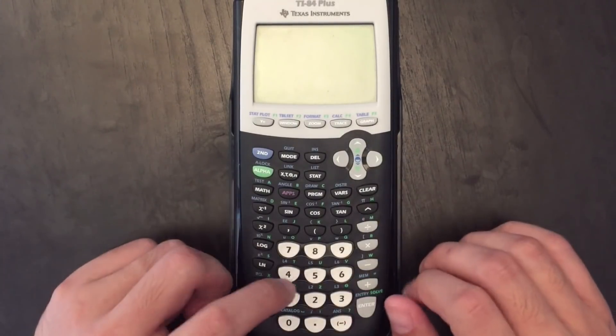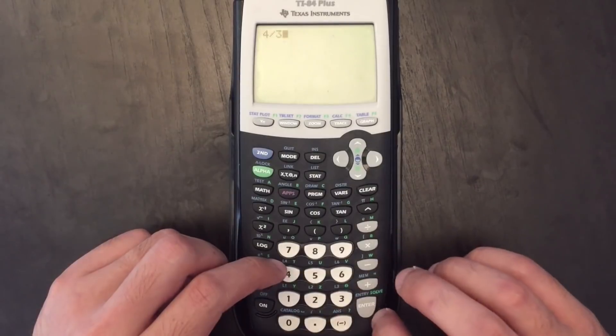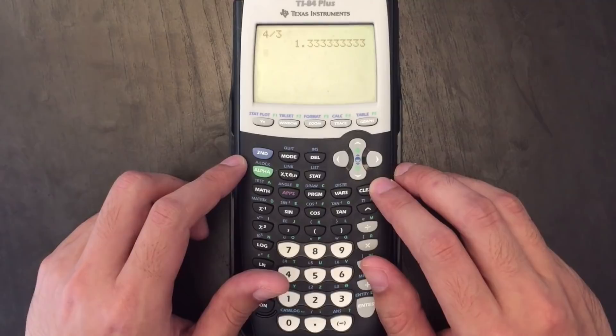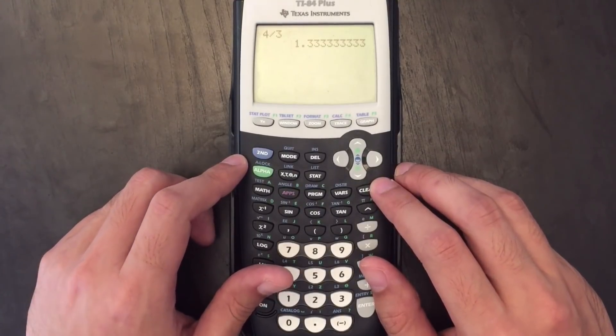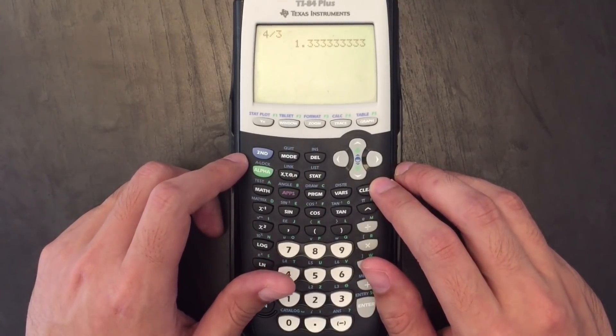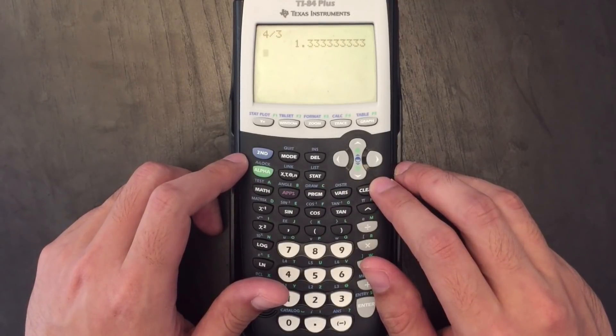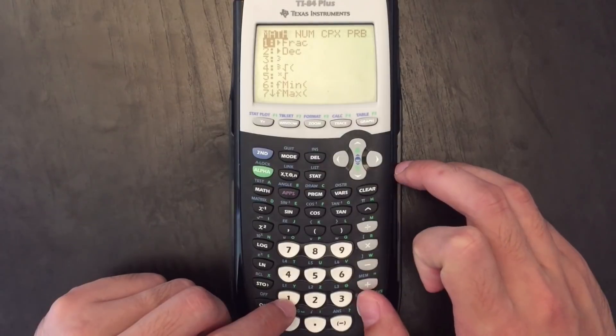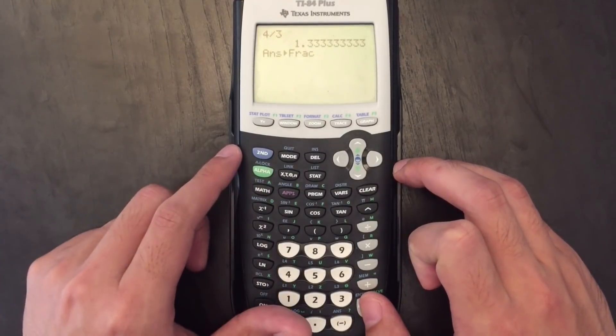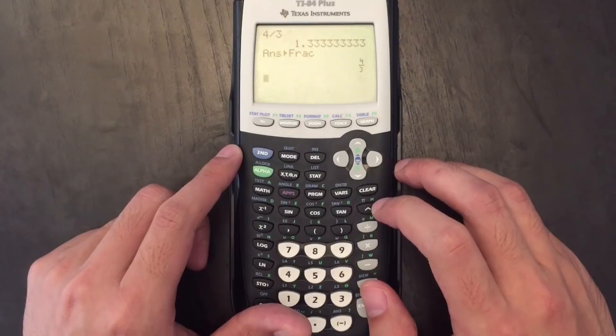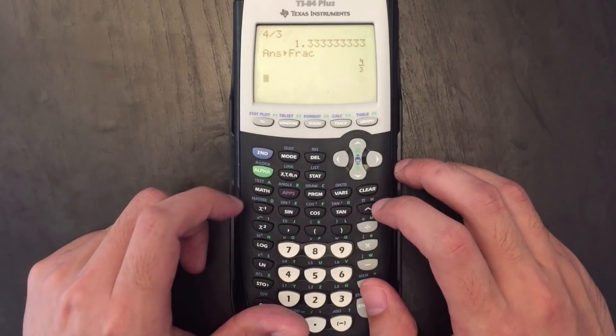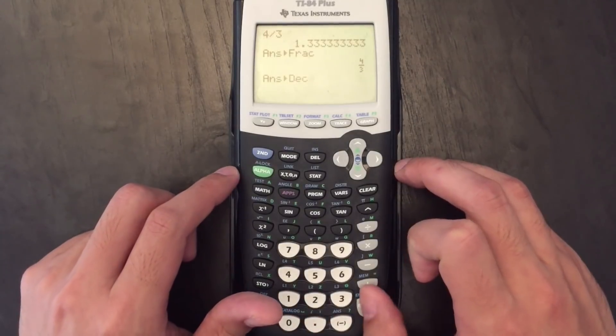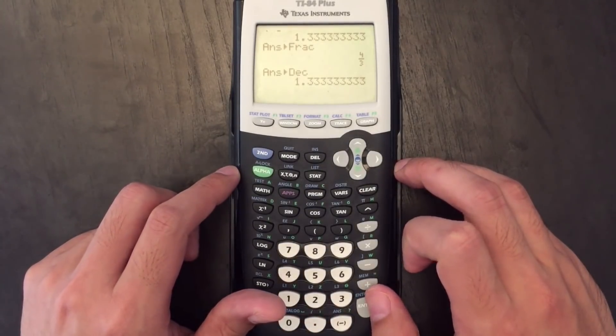So clearing all this out let's say I have a fraction like four thirds and this gives me back the equivalent decimal 1.3 repeating but let's say for a certain question I end up with a decimal and I want the equivalent fraction. What I can do is go to this math menu again and use this first function the two fraction and this will give me back the original four thirds. Similarly if I want the decimal I can use this two decimal function and this gets me back to 1.3 repeating.